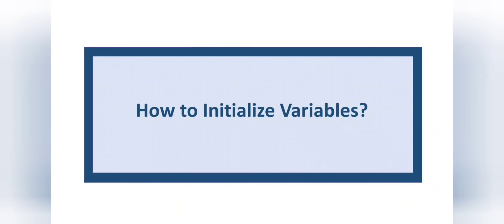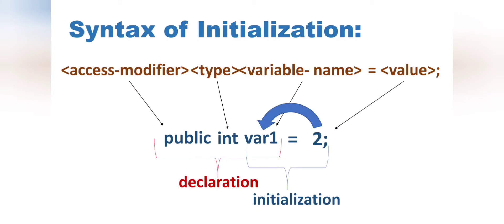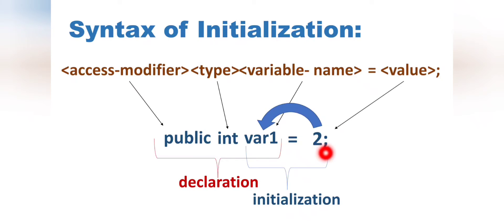Now we are going to discuss how to initialize a variable. To initialize means to assign or store a value — giving an initial value to a variable is called initialization. To initialize a variable we follow the syntax: access modifier, then type, then variable name, then an equal sign, then the value, and a semicolon at the end. For example: public int var1 = 2; Here the equal sign is called the assignment operator.